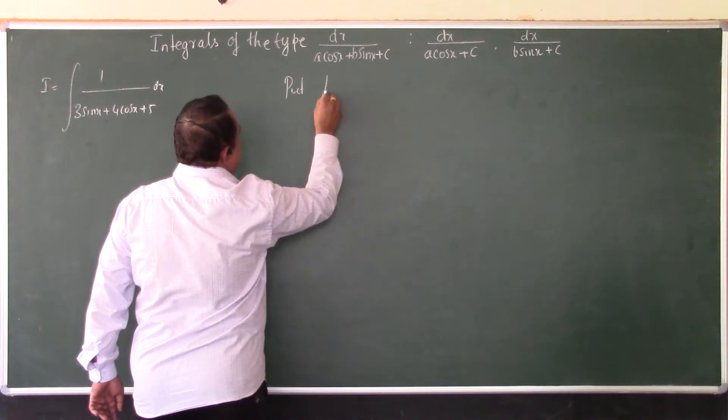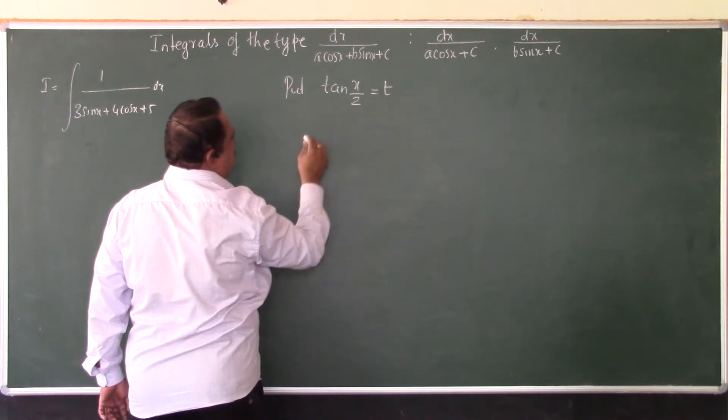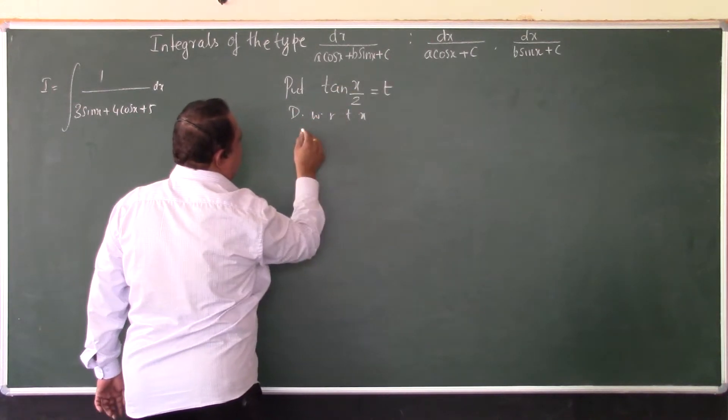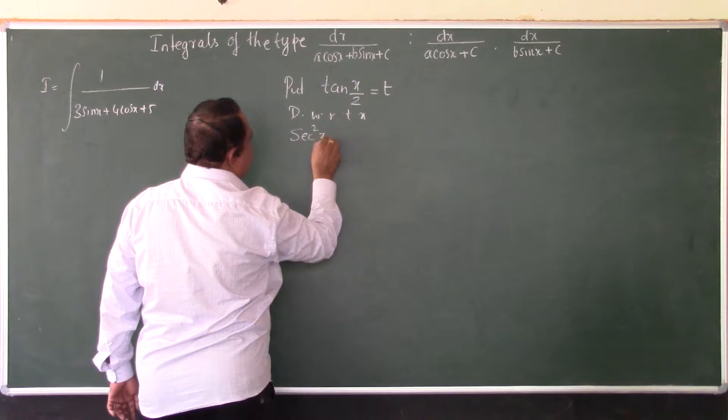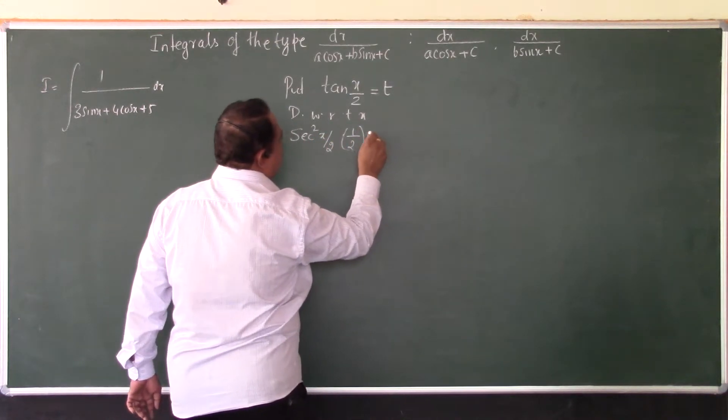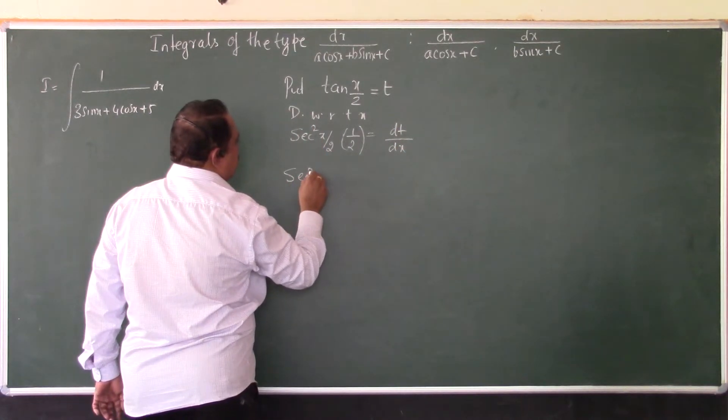Differentiating with respect to x, the differential coefficient of tan(x/2) is sec²(x/2) times the differential coefficient of x/2, that is 1/2, equals dt/dx. Or sec²(x/2) times 1/2 times dx equals dt.